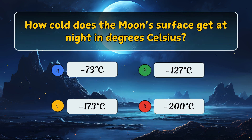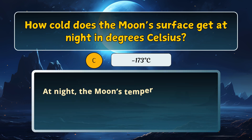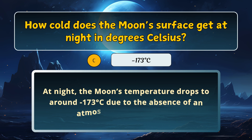How cold does the moon's surface get at night in degrees Celsius? Here is the answer: minus 173 degrees Celsius.